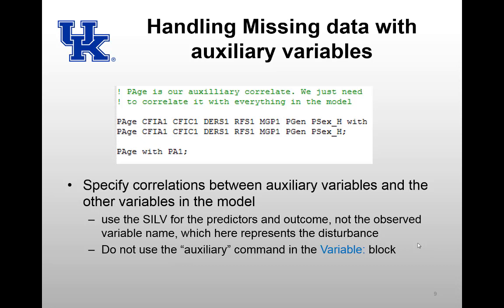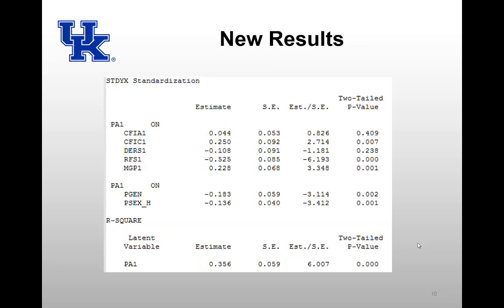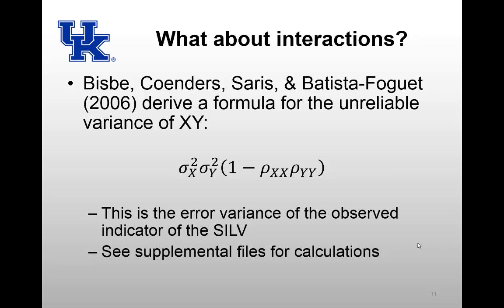So we get some new results; they don't look terribly different, but if there was a lot of added information from incorporating the p_h variable, then these would be a bit different than the previous results. So another thing that we can deal with using single indicator latent variables is interactions.